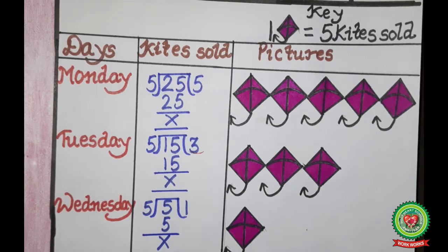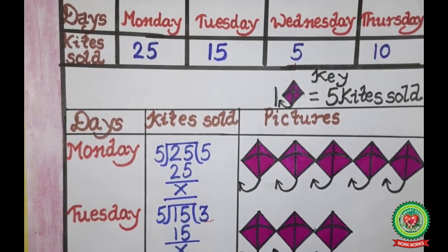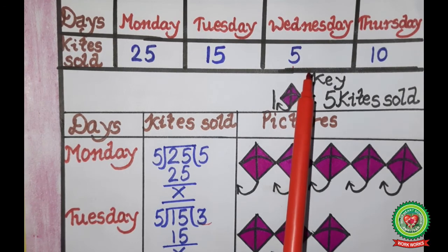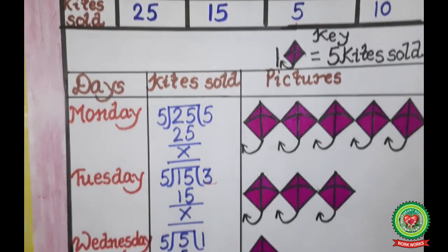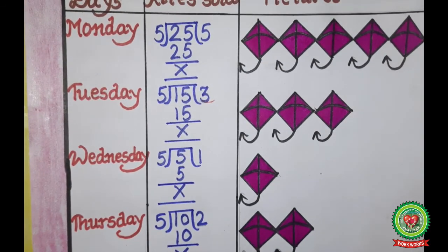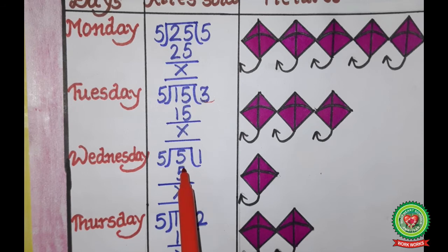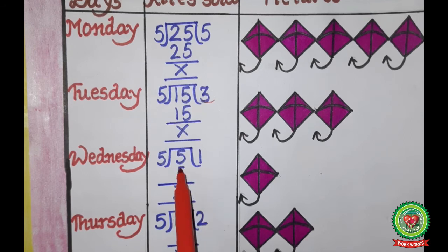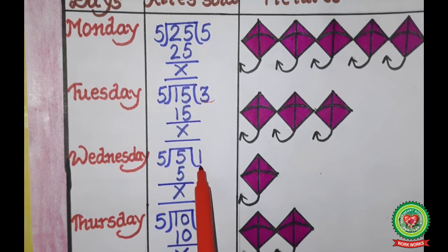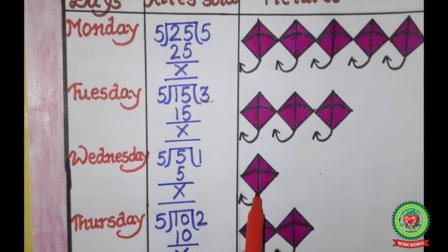The next number is 5. Divide 5 by the key, which is 5. On the 5 times table, 5 comes at 1 — so 5 ones are 5, remainder 0. The quotient is 1, so we draw 1 kite picture for Wednesday.